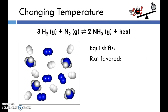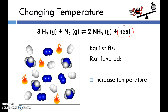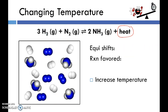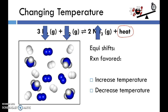For temperature changes, we have to pay close attention to where the heat term is. If we increase the temperature, think of it as adding extra heat or energy to the system. The system wants to use that heat — effectively we've increased one of the products — so it will favor the endothermic reaction, which uses heat. In this case that means shifting to the left, favoring the reverse reaction. If we decrease the temperature, there's less heat, and the system favors the exothermic reaction to restore temperature — that's the forward reaction. We shift right and increase the concentration of NH3.